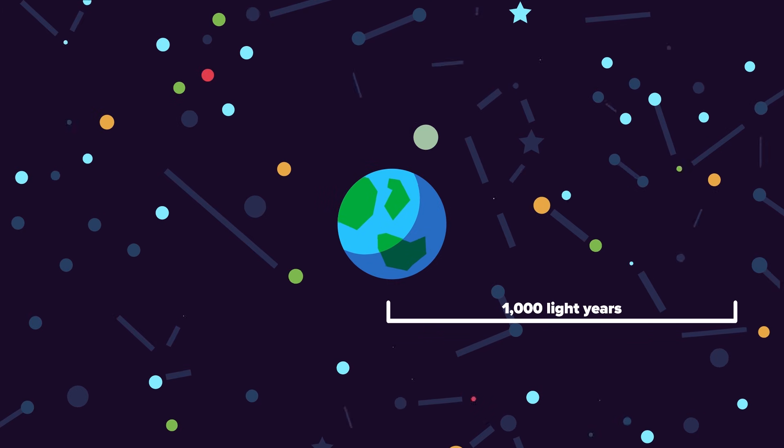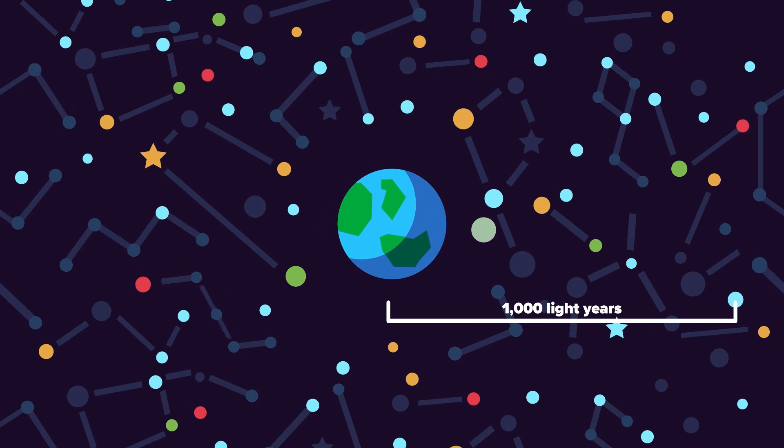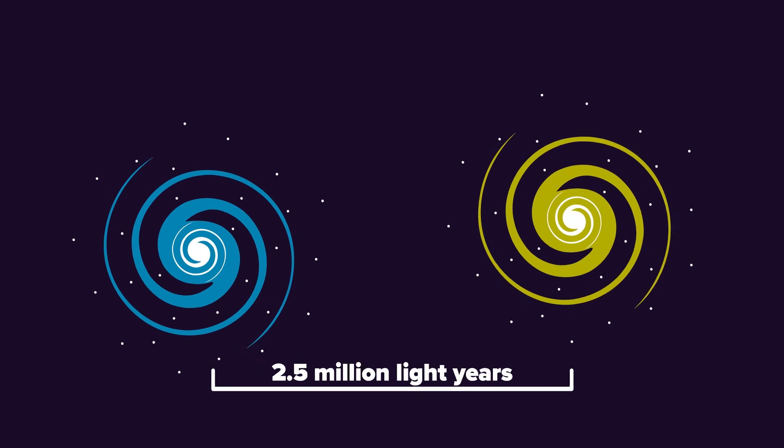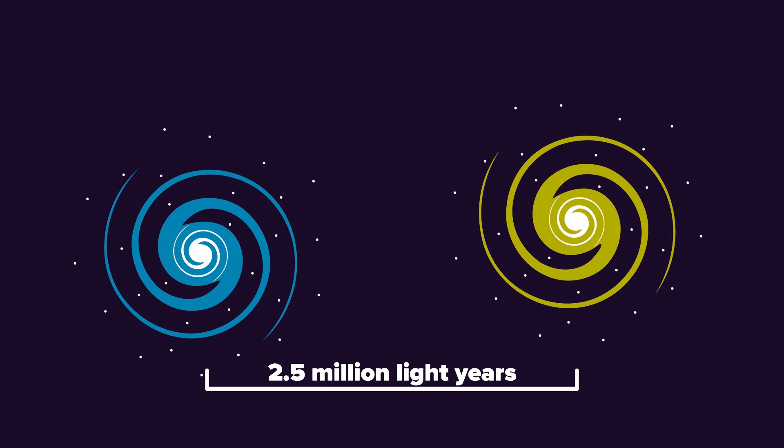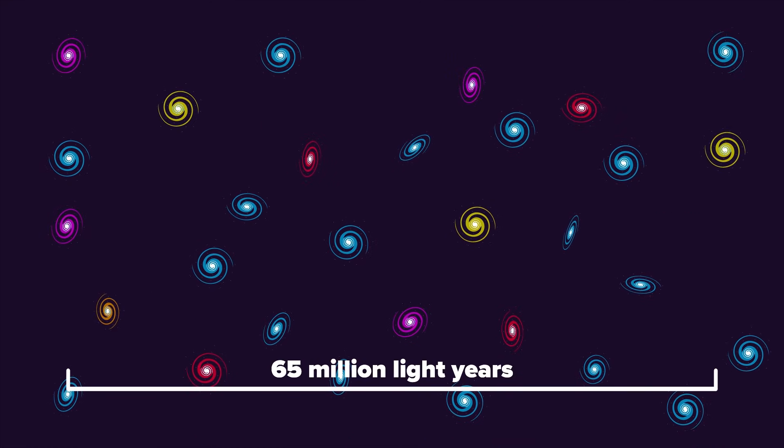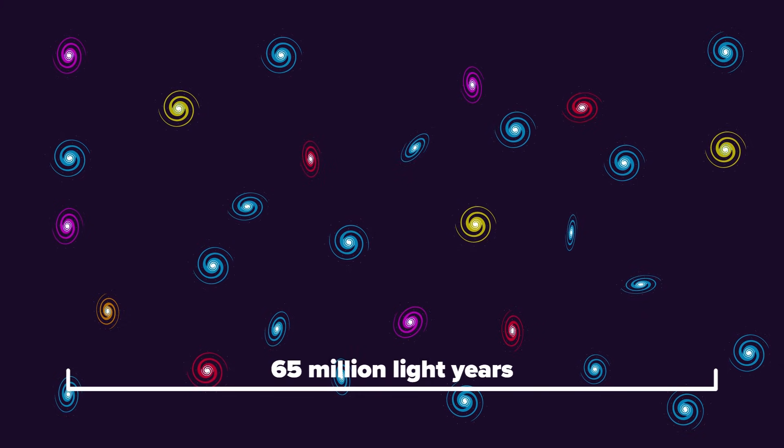For perspective, the vast majority of the visible stars in the night sky are within about 1,000 light years of us. The Milky Way is about 100,000 light years across. The nearest galaxy, Andromeda, is about 2.5 million light years away. At 65 million light years, our alien astronomers would be in the far-off Virgo cluster of galaxies.